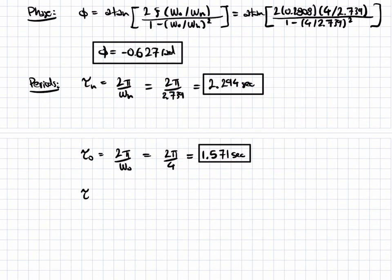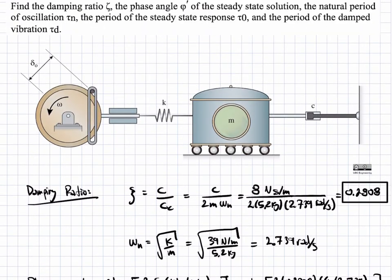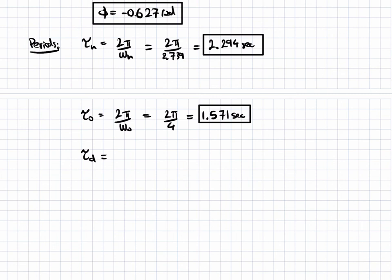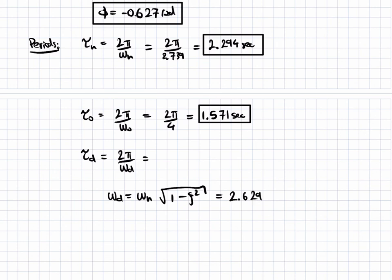The last time period to analyze is tau_d, the period of the damped vibration. This equals 2 pi divided by the damped frequency omega_d. We can derive omega_d as the natural frequency times the square root of 1 minus the damping ratio squared. Plugging in the values, the damped frequency is 2.629 radians per second. So tau_d equals 2 pi divided by 2.629, which gives 2.390 seconds.